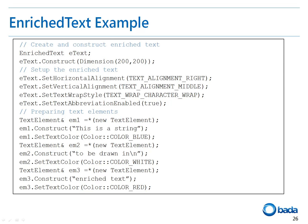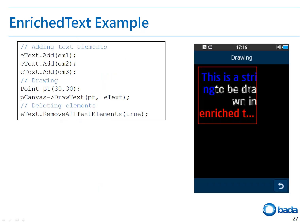This is an example of enriched text. To use enriched text, I created and constructed an enriched text object, then specified the horizontal alignment, vertical alignment, text wrap style, and text abbreviation enabled properties. After that, I added text elements to the enriched text — a text string element is necessary, and then we can specify the color and font. I've created a few elements with different colors. When you add these text elements to the enriched text and draw the text on screen, the text string is aligned as specified and the part that extends beyond the boundary is cut off.